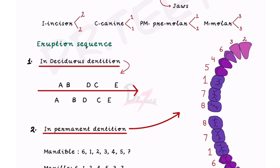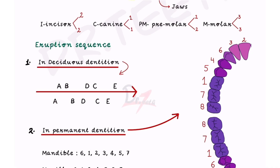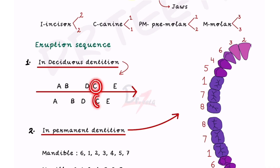Now let's talk about the eruption sequence — the chronology we discussed earlier. For the deciduous dentition, the first tooth to erupt is 'A' of the mandible, the lower central incisor. Then: upper central incisor, upper lateral incisor, lower lateral incisor, lower first molar, upper first molar, upper canine, lower canine, lower second molar, and finally upper second molar.